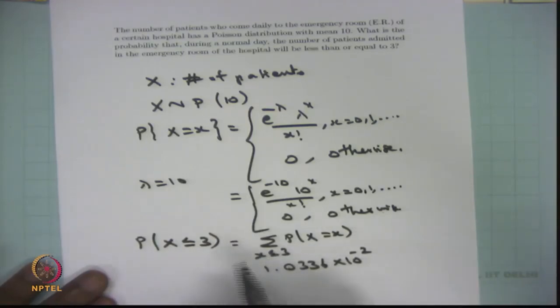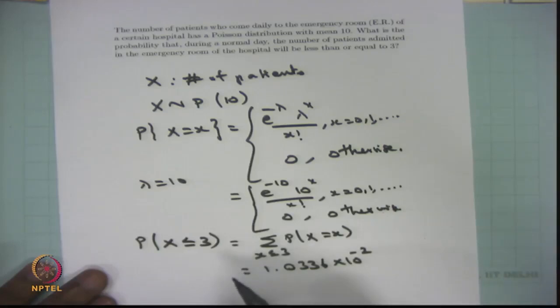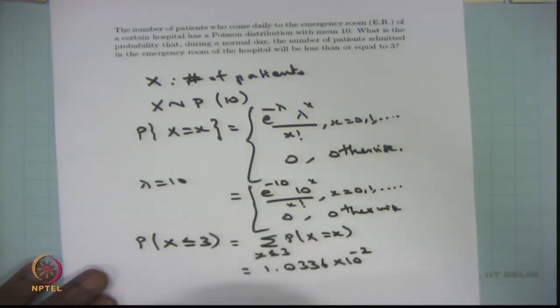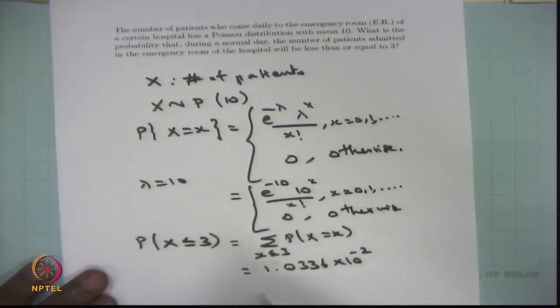This problem can also be extended: the probability that no patient is admitted equals P(X = 0), or the probability that at least one patient is admitted is 1 − P(X = 0). You can also ask for the variance of X; since for a Poisson distribution the mean and variance are equal, the variance is also 10. Many more problems can be created from the same setup.